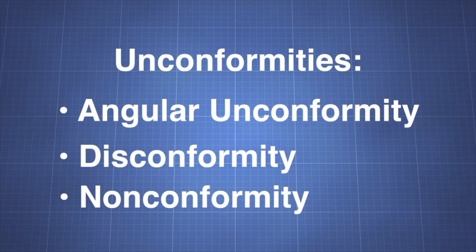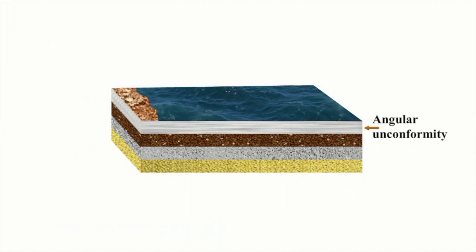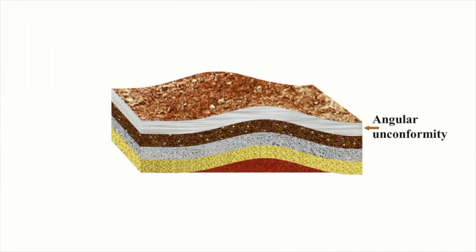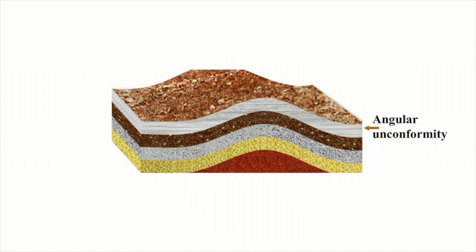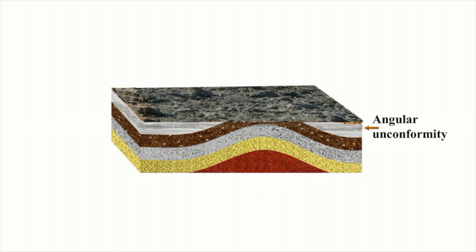There are three different kinds of unconformities. An angular unconformity is formed by a process that begins when sedimentary rocks are deposited into horizontal layers. These rocks are then deformed, tilting due to forces in Earth's interior. Next, weathering erodes the tilted rocks.